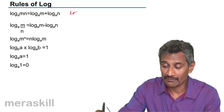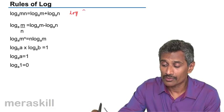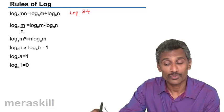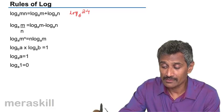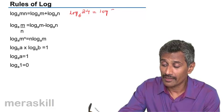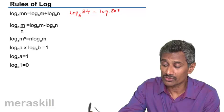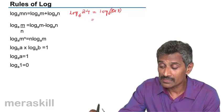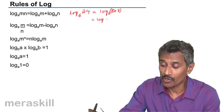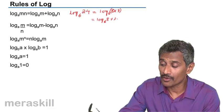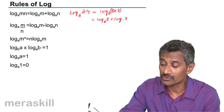Suppose I have log 24 to the base 6. This can be written as log 8 times 3 to the base 6 because 24 is 8 into 3. This is the same as log 8 to the base 6 plus log 3 to the base 6.